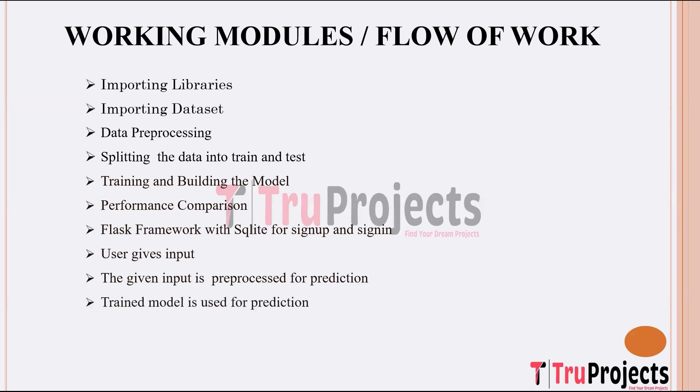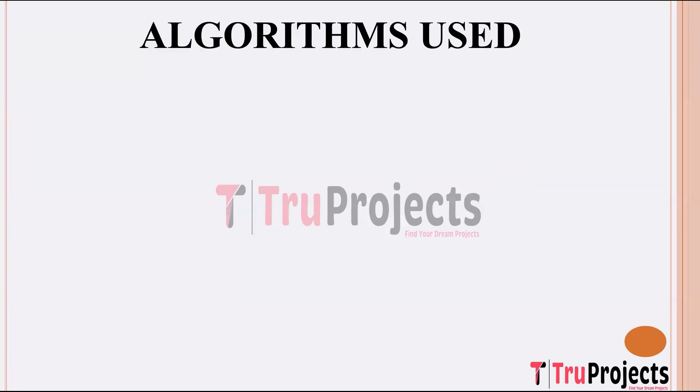The pre-processed input data is passed through the trained deep learning models to predict whether the input corresponds to an influential user or not. The models analyze the visual content to make these predictions. The final prediction outcome, along with additional insights or information, is displayed to the user through the front-end interface. Users can interpret the results and make informed decisions based on the predictions made by the system.